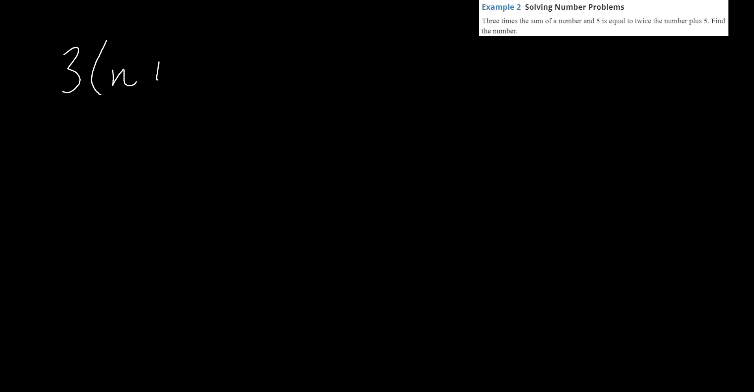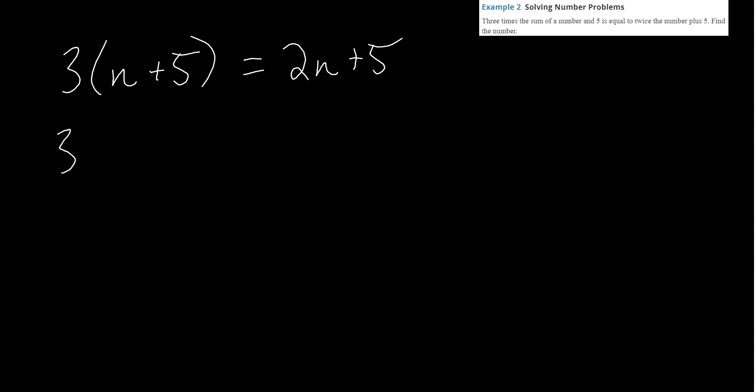Example two: three times the sum of a number and five is equal to twice the number plus five. We stop at 'is' because that tells us what the left side is. Three times the sum of some number and five is written as 3(n + 5). That equals twice the number plus five, so 2n + 5. We distribute on the left to get 3n + 15, which equals 2n + 5.